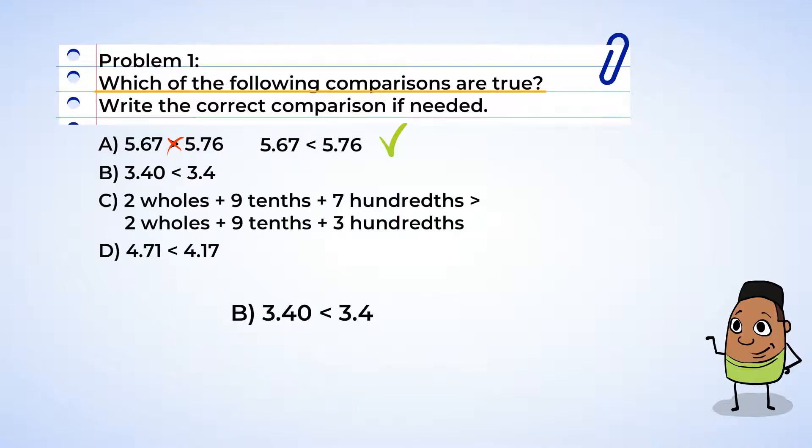Next up, part B. 3 and 40 hundredths is less than 3 and 4 tenths. The ones are the same, and so are the tenths. Yeah, one number has a zero in the hundredths and the other does not. So this does not make it larger just because it has more digits. See, we can put a zero in the hundredth place to act like a placeholder. These numbers are the same. We need to replace the symbol with an equal sign. Well, that was tricky, but the tricky question couldn't fool us.